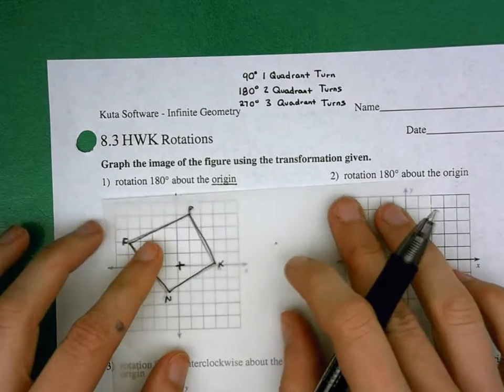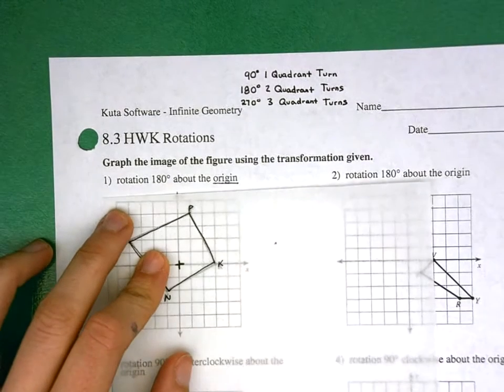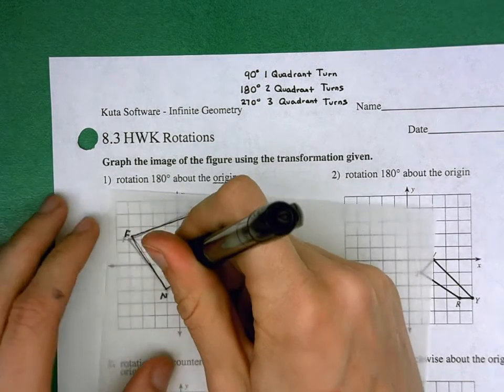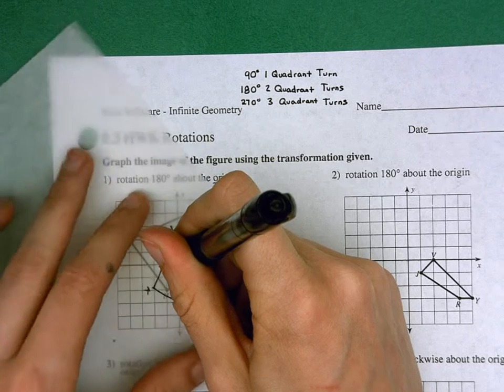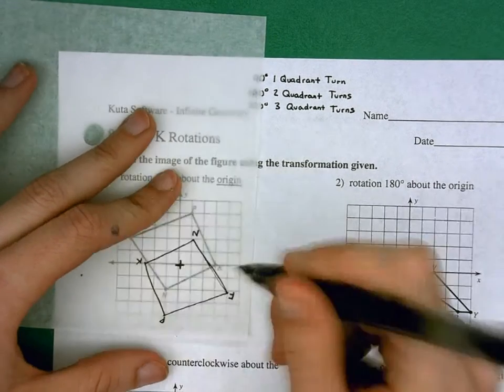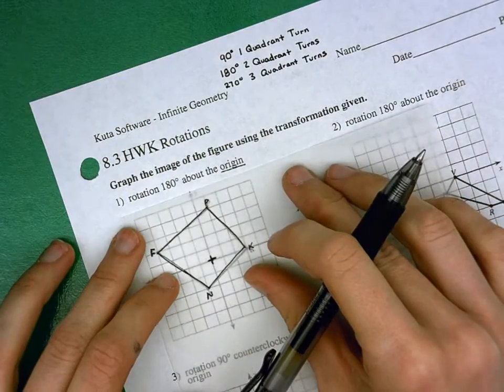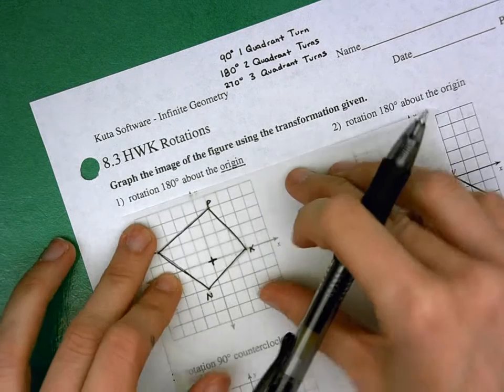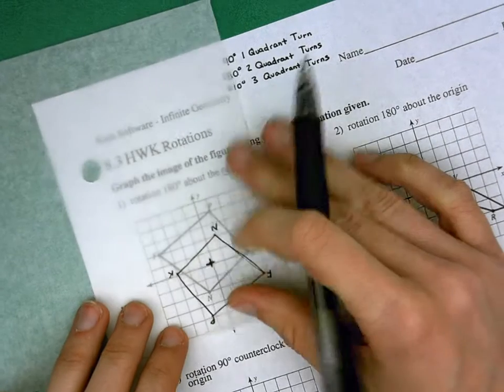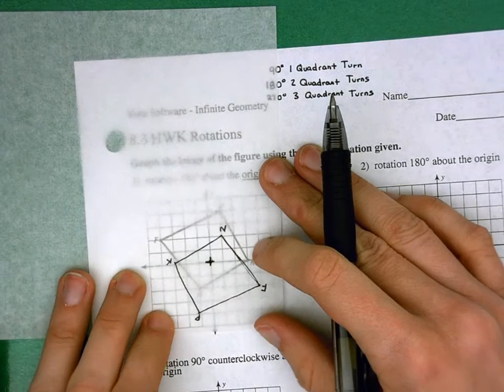Okay, so I'm going to go ahead and go back. 180 degrees is two quadrant turns. They don't say whether to do clockwise or counterclockwise because it doesn't matter. If I turn this two quadrant turns clockwise, I end up here. And if you notice, my p is in the third quadrant. Going back, I'm going to turn the other way just to make sure that we all see that it doesn't matter whether it's clockwise or counterclockwise. If I turn the other way, counterclockwise, my p still ends up in the third quadrant. No matter what, you'll end up in the same place with 180 degrees.